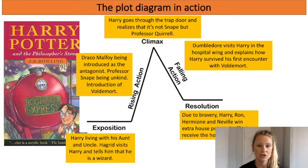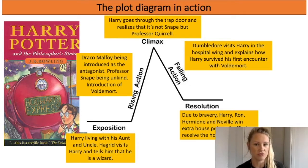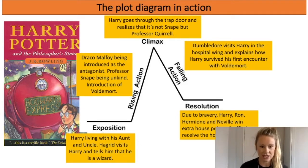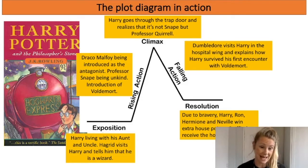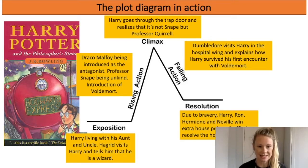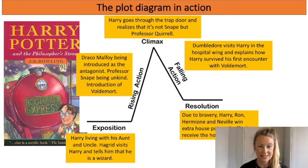Now moving on to the plot diagram in action. I thought I'd use a story that I think most of you will probably be familiar with and I'd like to talk you through how this looks in action. So I want you to imagine Harry Potter and the Philosopher's Stone. The exposition might be Harry living with his aunt and uncle, and Hagrid visits Harry and tells him that he's a wizard. That sets the scene. The rising action is then when we are introduced to the antagonist Draco Malfoy, Professor Snape being unkind to Harry and his friends, and we're introduced to the character of Voldemort.